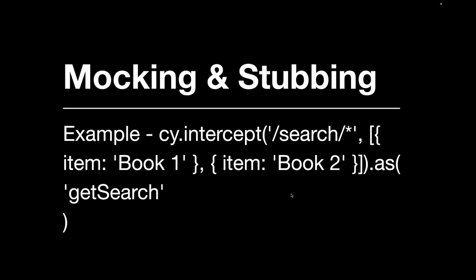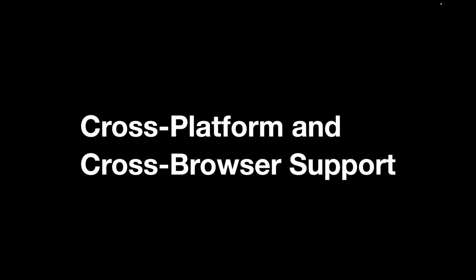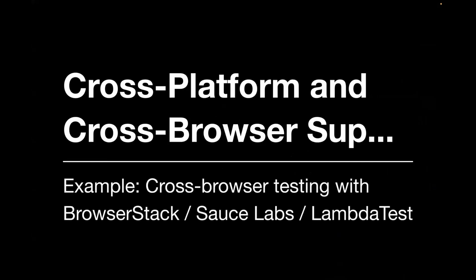Here is a sample example from Cypress showing how you can use intercept for mocking APIs. Moving on to cross-platform and cross-browser support — this is very important because you should design your framework to accommodate testing across different operating systems and browsers. You do not know whether your end user is using an iPhone or a desktop browser. Ensure your tests run across different browsers and devices using platforms like BrowserStack, Sauce Labs, or LambdaTest.